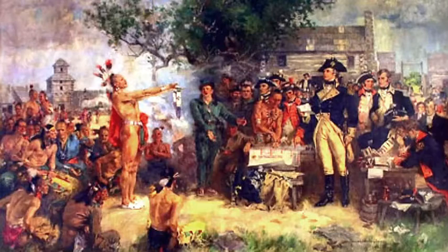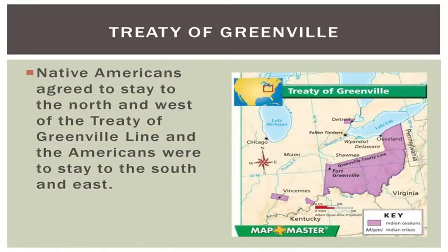This map indicates what the Indians were forced to give up — basically all of what makes up the current boundaries of the state of Ohio and part of Indiana. The question of whether the federal government would and could protect the process of westward settlement even in the face of Indian resistance had been answered. Washington had passed his first major domestic test as president, and almost universally the actions taken against the Indians won public approval.